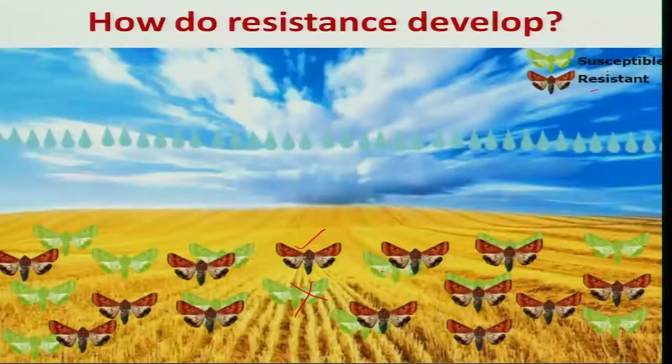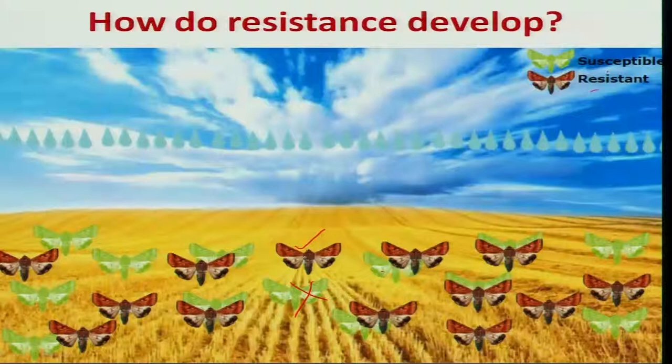When this resistant population goes on increasing in the given ecosystem, even after spraying you notice no decrease in population, thereby economic damage also increases. When you see economic damage even after spraying, then you realize the insect has developed resistance. This is a simple concept.